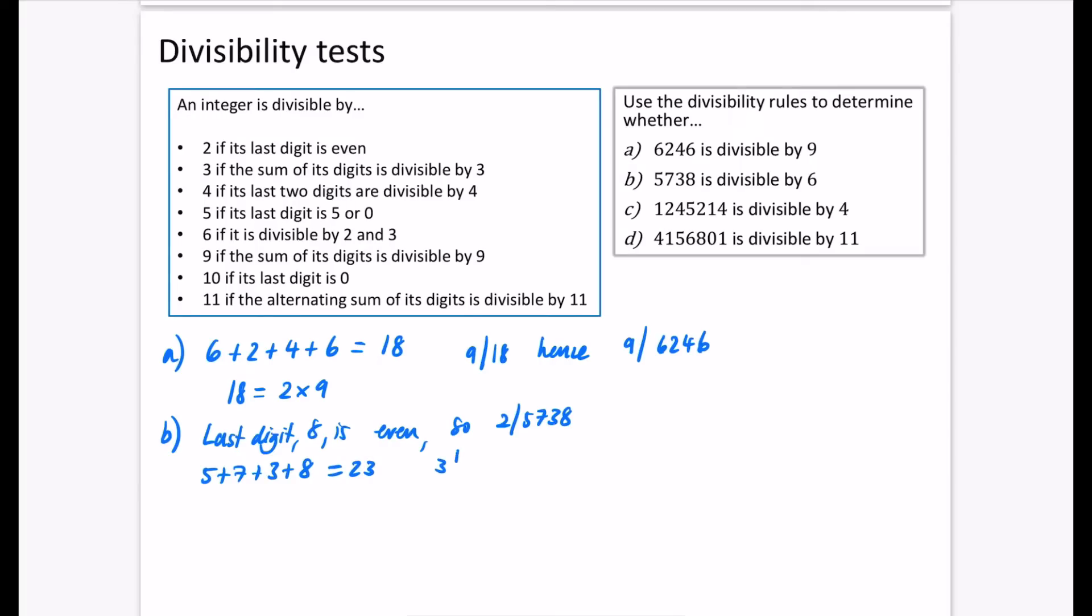Hence, we are not saying that it's divisible by 2 and 3. So it is not divisible by 6. Hence, 6 does not divide 5,738. So this one was, this one wasn't.